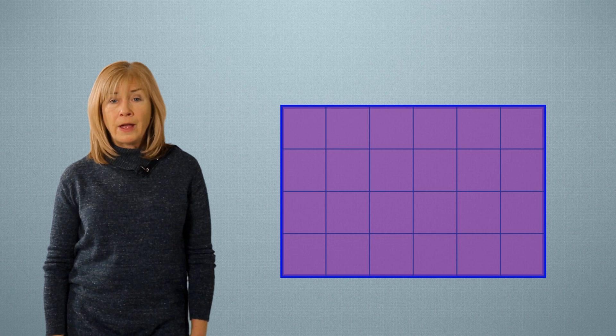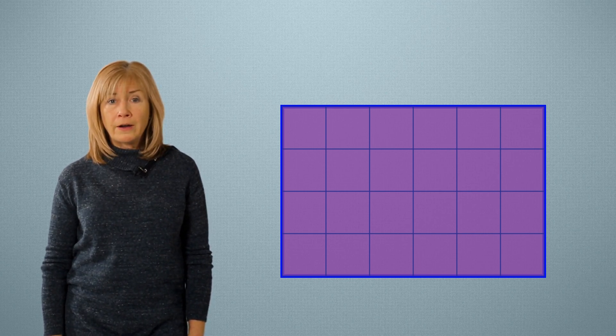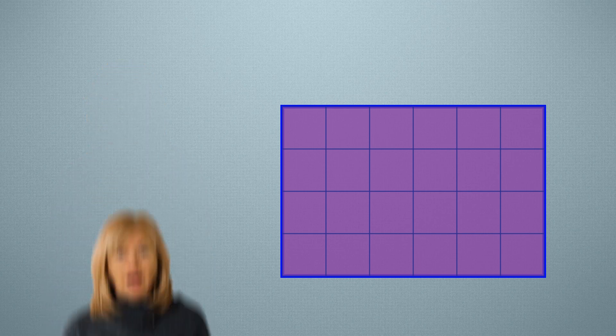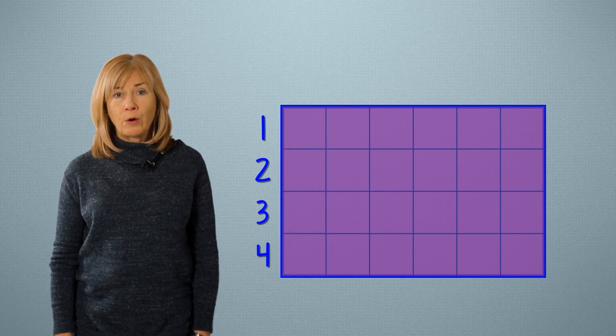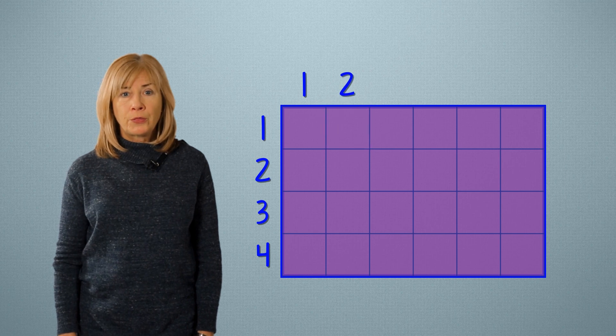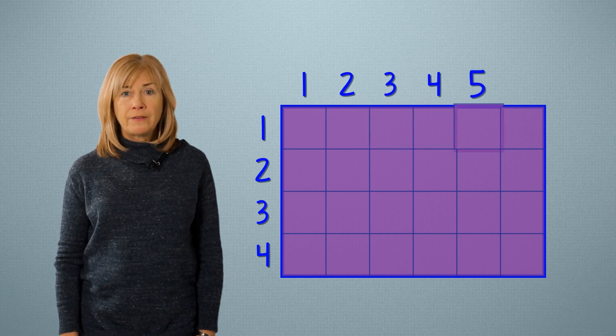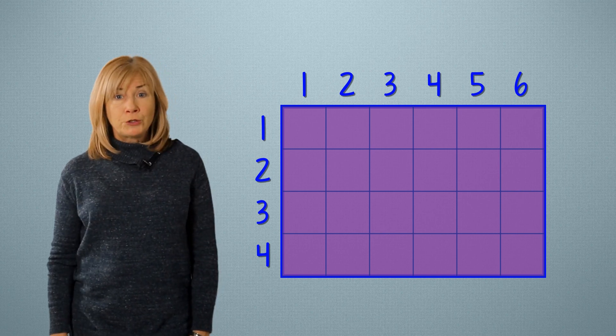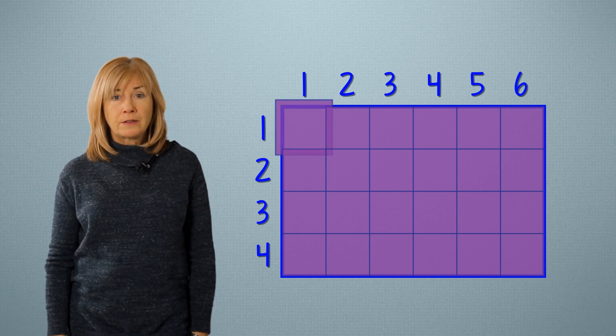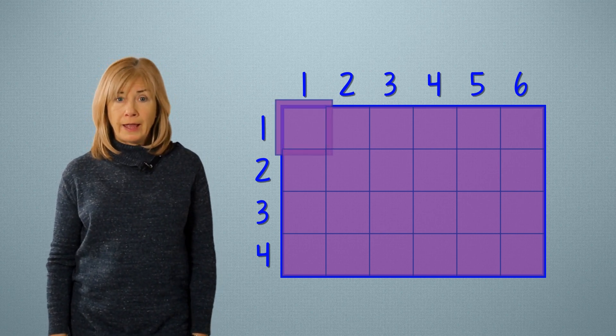How many rows are there, and how many tiles are in each row? I have 1, 2, 3, 4 rows, and 1, 2, 3, 4, 5, 6 tiles in each row. Be sure to count this first tile, it's part of the rows and columns.